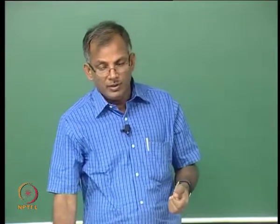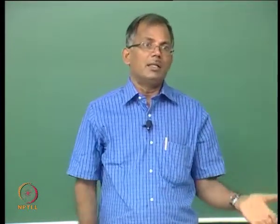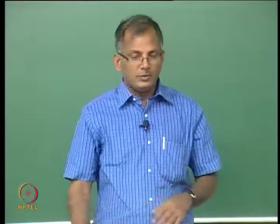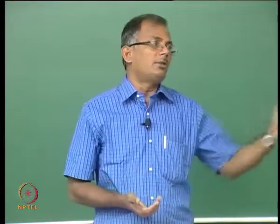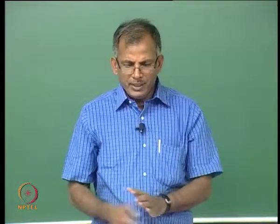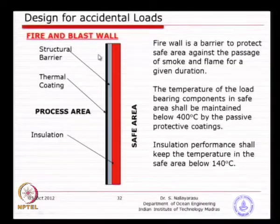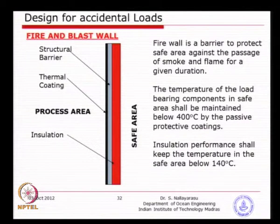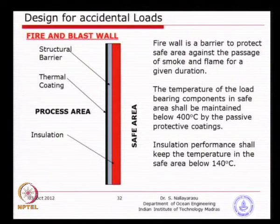There is a potential risk of blast happening first followed by fire, which allows direct contact of large temperature inside the occupants' building. Basically, the idea of a fire and blast wall is a bifurcation between process or unsafe area to a safe area, comprising structural resistance against blast and thermal resistance against fire, and reduction of temperature to a desired level inside the building.